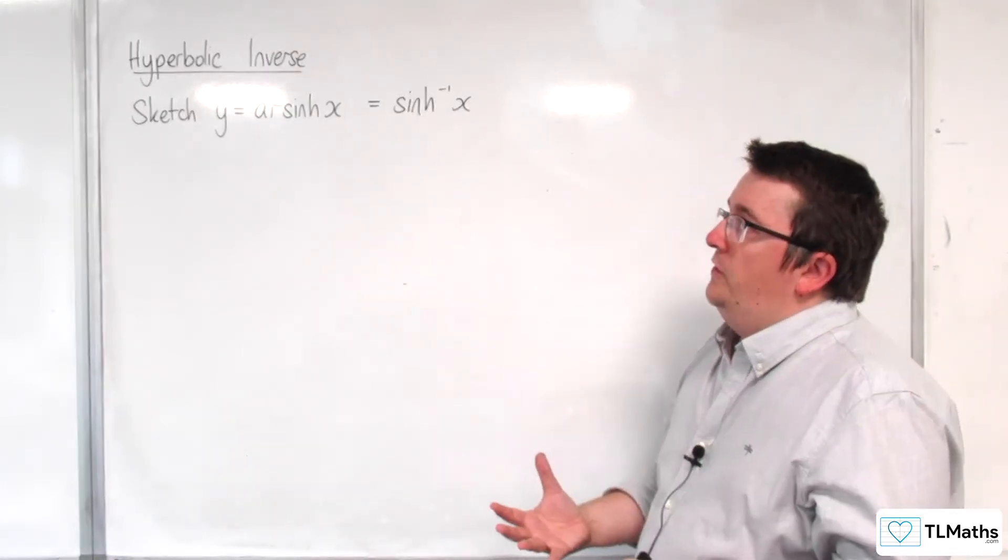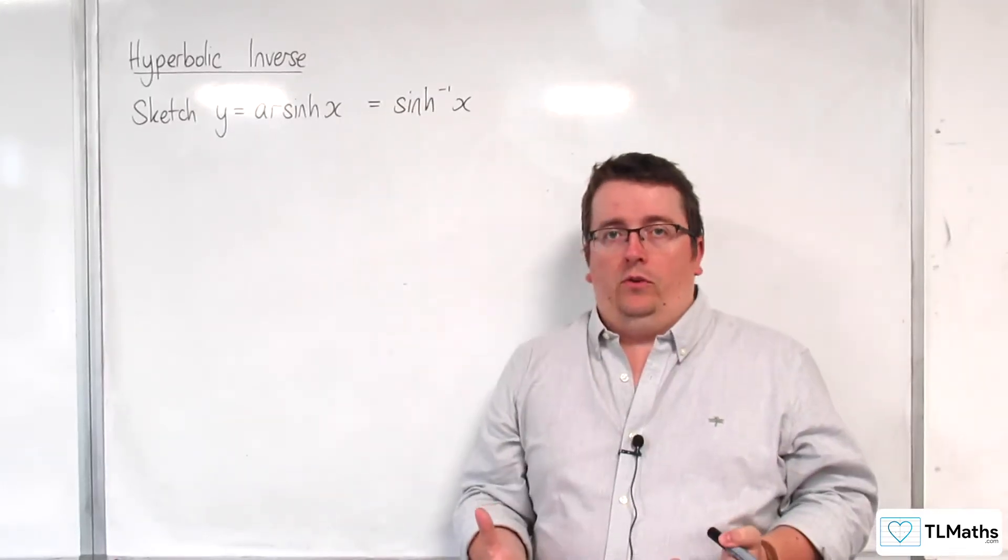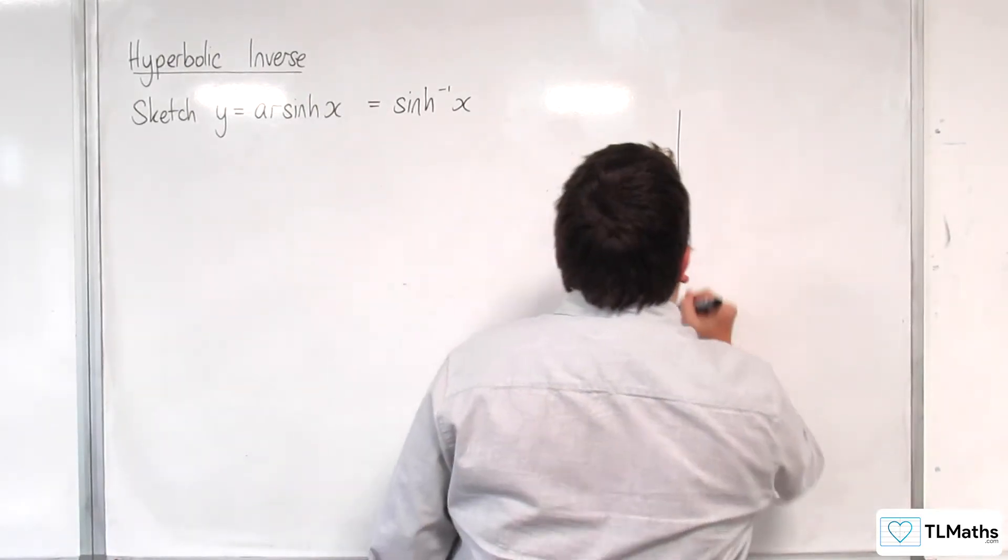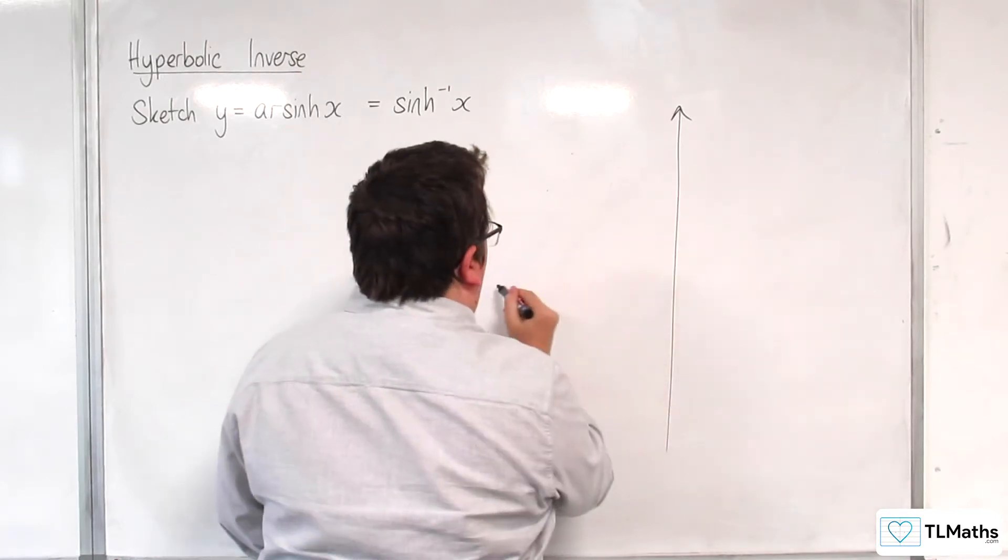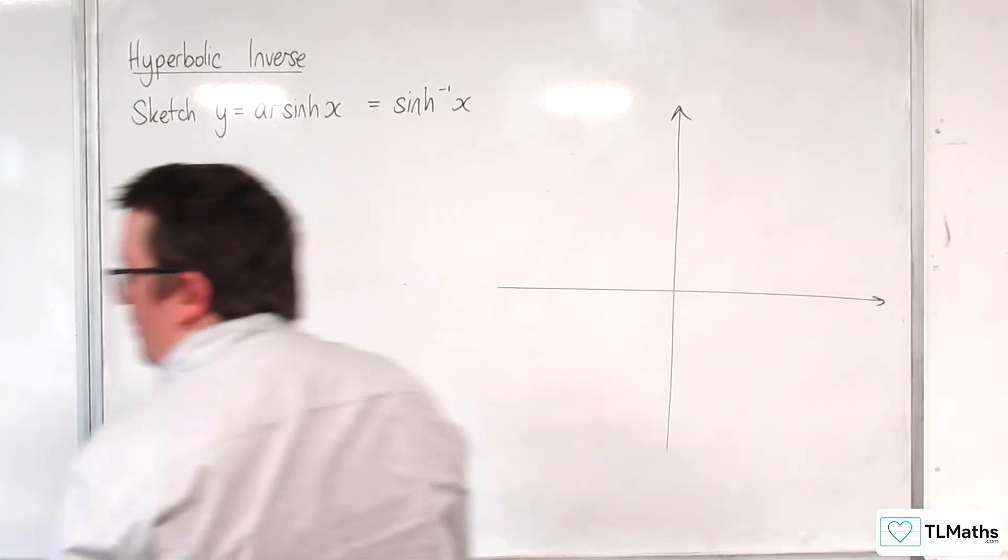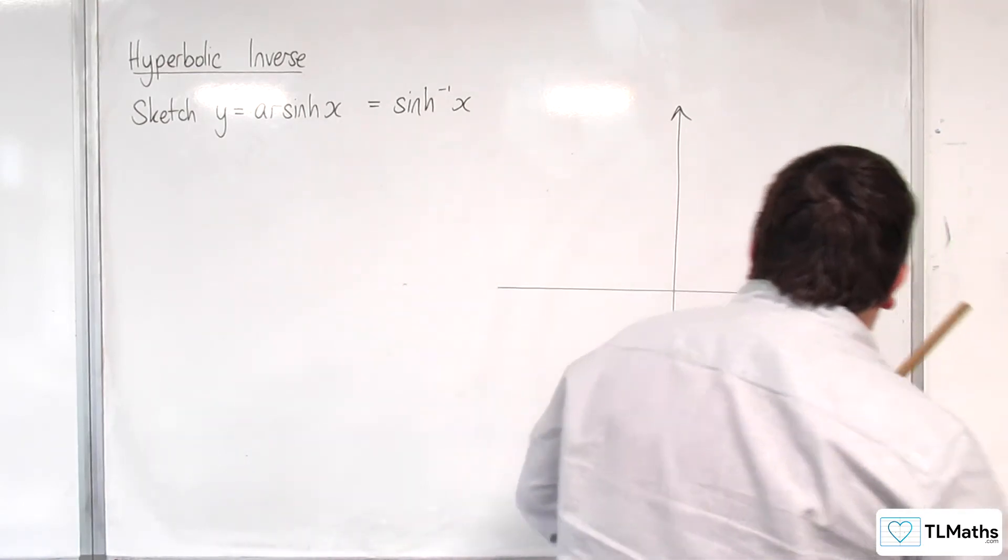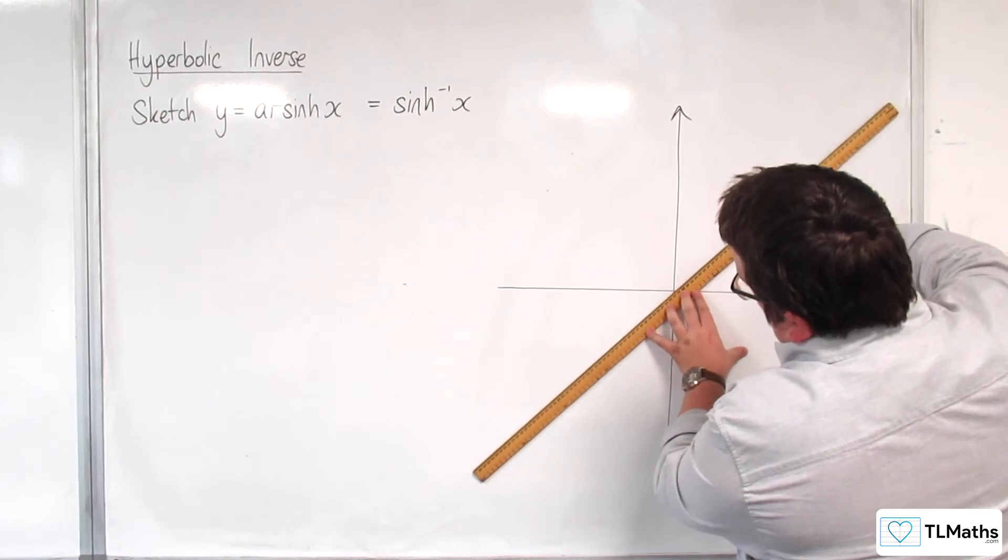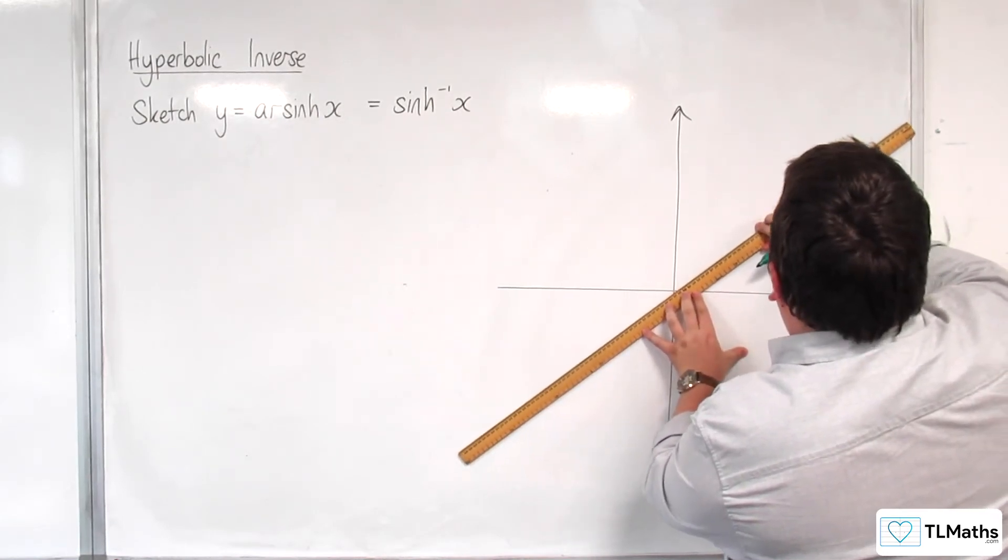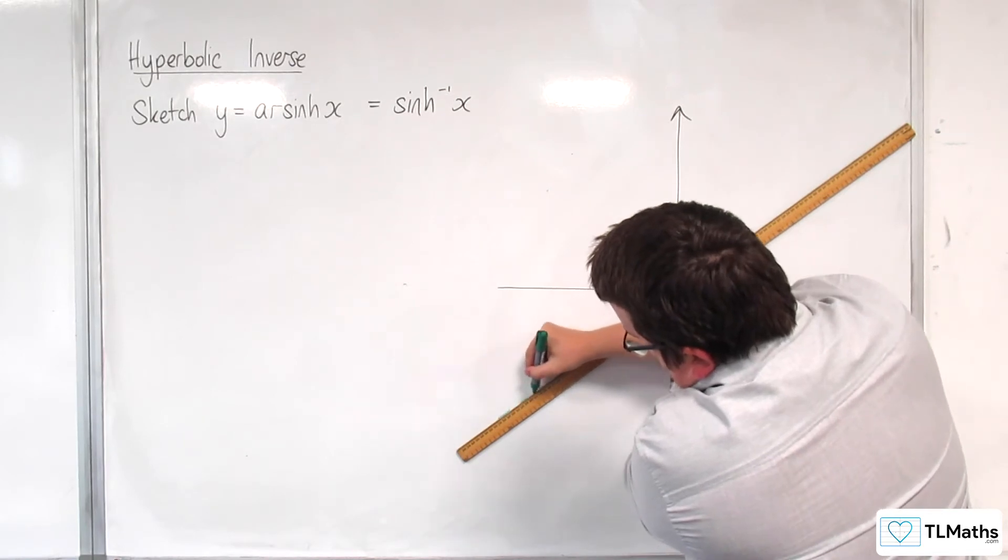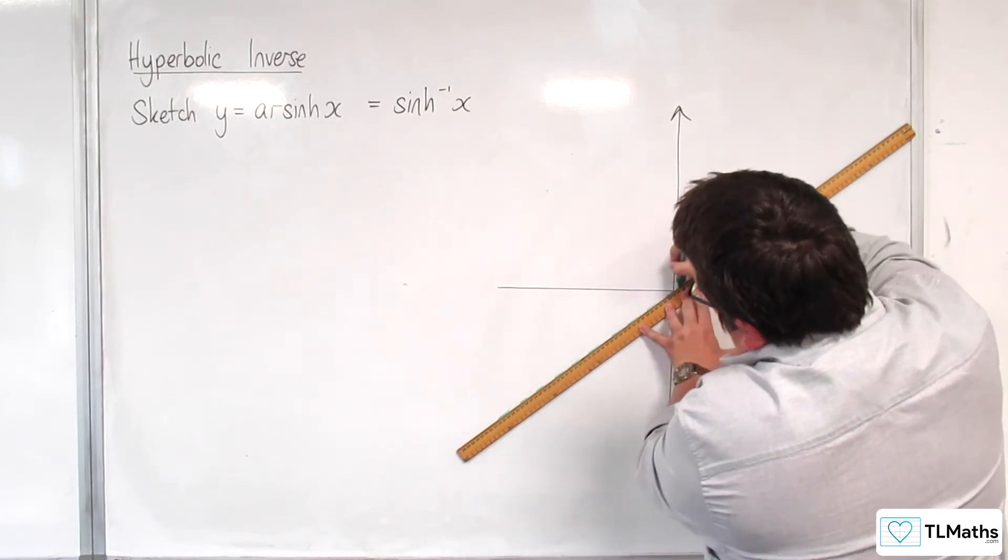Let's first think about what this function must look like. Let's draw some axes. Let's draw on y equals x, because we know that the function and its inverse must be reflections of each other in y equals x.